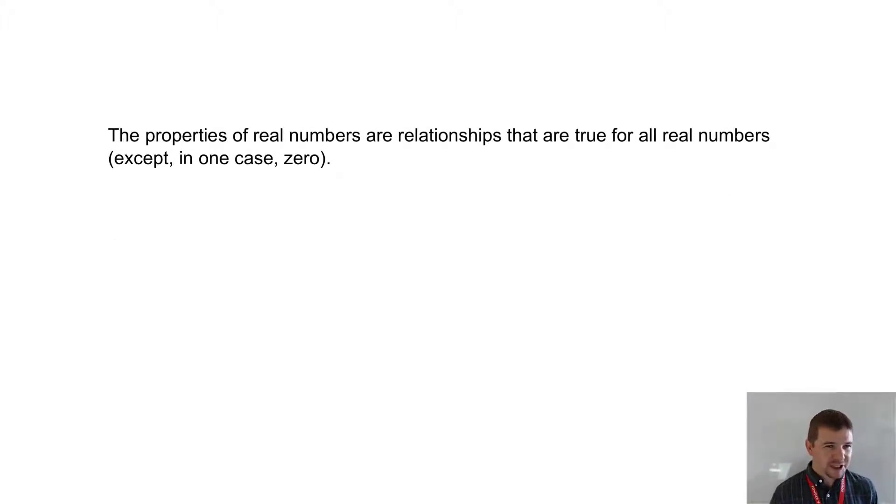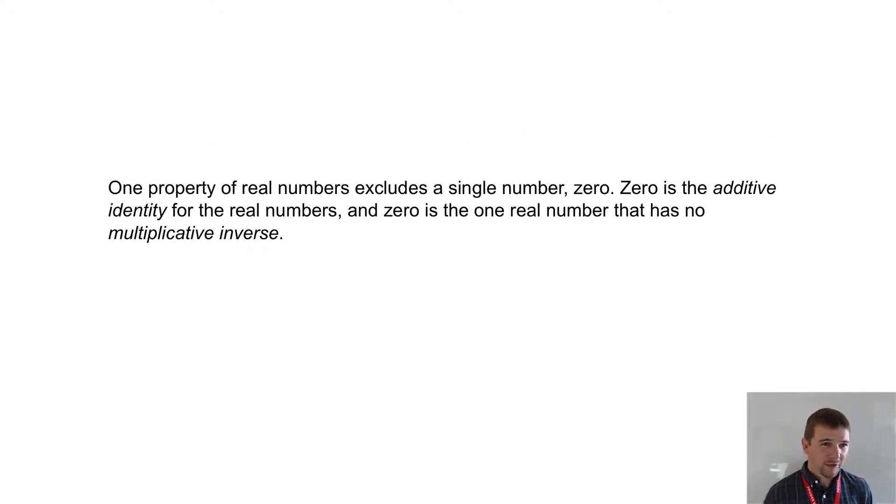The properties of real numbers are relationships that are true for all real numbers, except in one case zero. One property of real numbers excludes a single number zero. Zero is the additive identity for the real numbers, and zero is the one real number that has no multiplicative inverse.